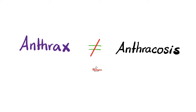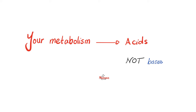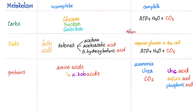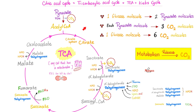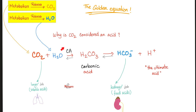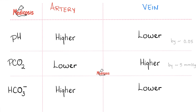Anthrax is not the same as anthracosis. Now let's review some biochemistry. Your body metabolism secretes acids such as pyruvic acid, uric acid, sulfuric acid, phosphoric acid — all kinds of acids. Even the carbon dioxide that you release from your metabolism is an acid, because carbon dioxide combines with water giving you carbonic acid. When your cell metabolizes, the cell dumps all of that acidity onto the vein. That's why veins are more acidic than arteries.